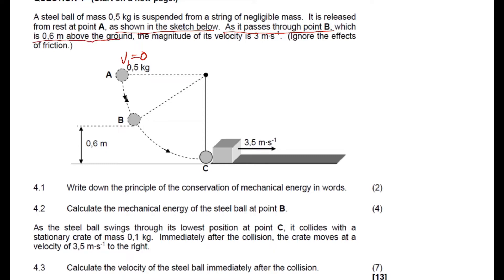It then passes through point B, which is 0.6 meters above the ground. As the ball goes down, the velocity increases from 0. At point B, the magnitude of its velocity is 3 meters per second, because the velocity increases as the object goes down.